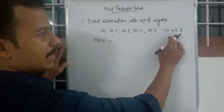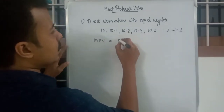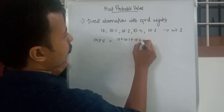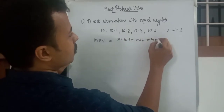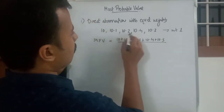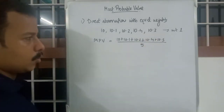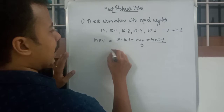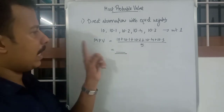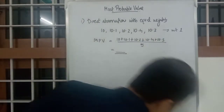So how do you calculate MPV? The MPV of direct observations with equal weights is calculated by taking the average or mean of these values when weight is equal for all values. That is just 10 plus 10.1 plus 10.2 plus 10.4 plus 10.3 divided by the number of values — 1, 2, 3, 4, 5. That result is called the MPV.